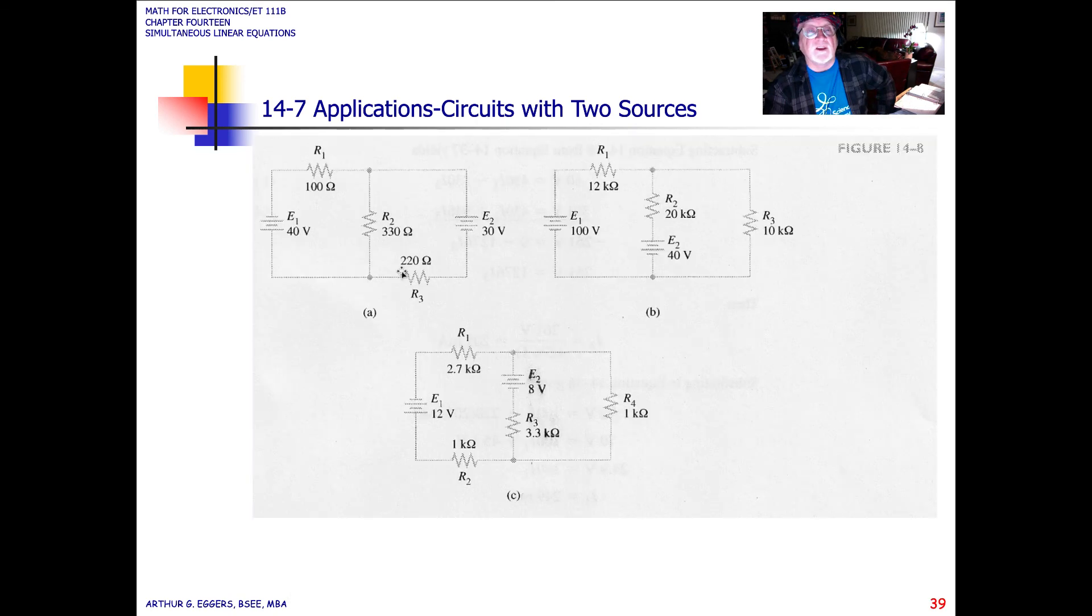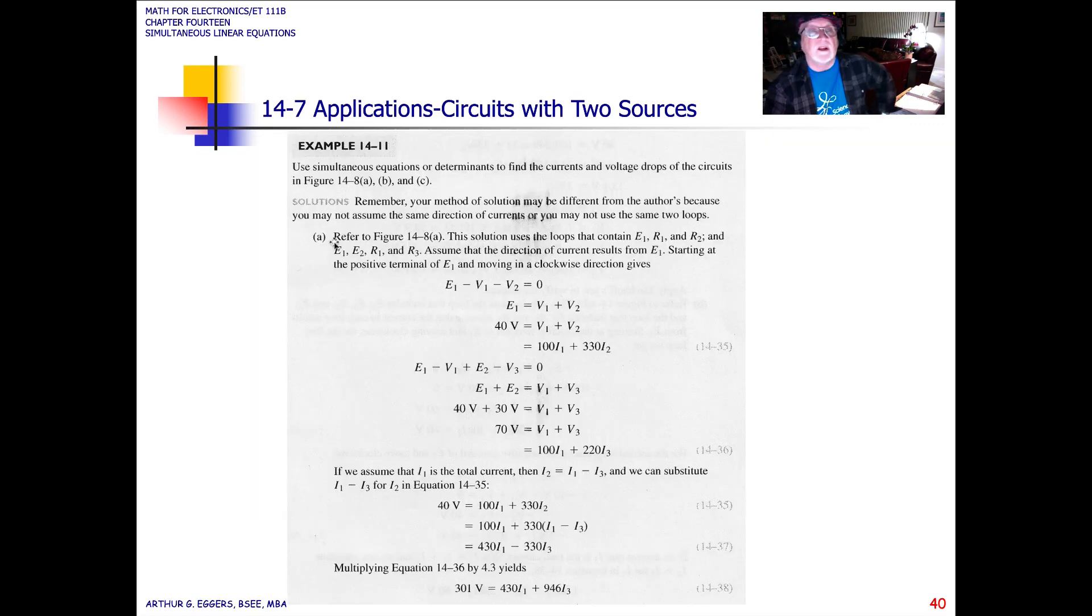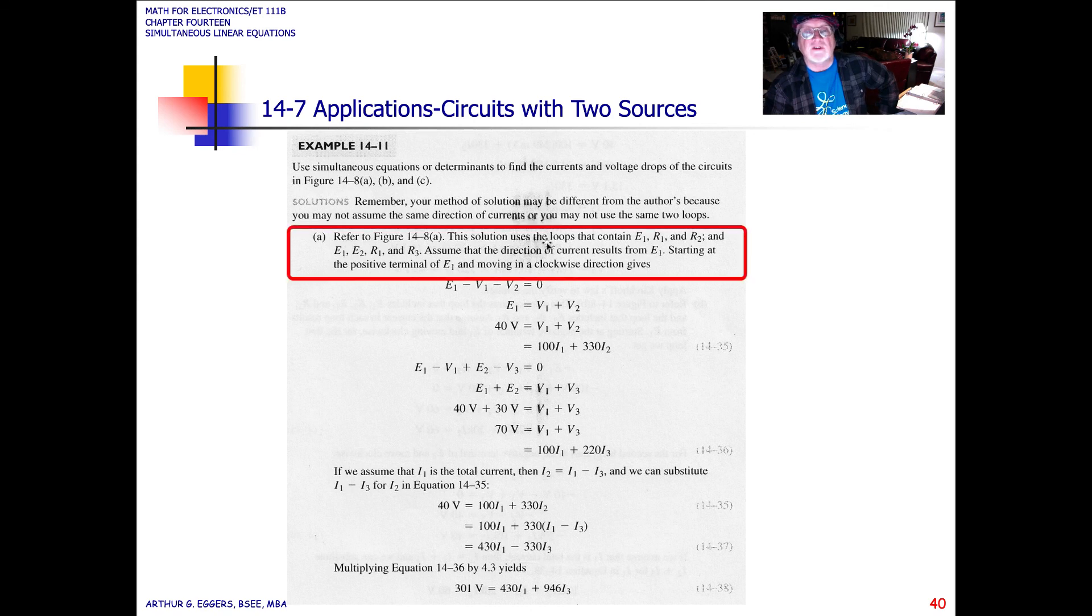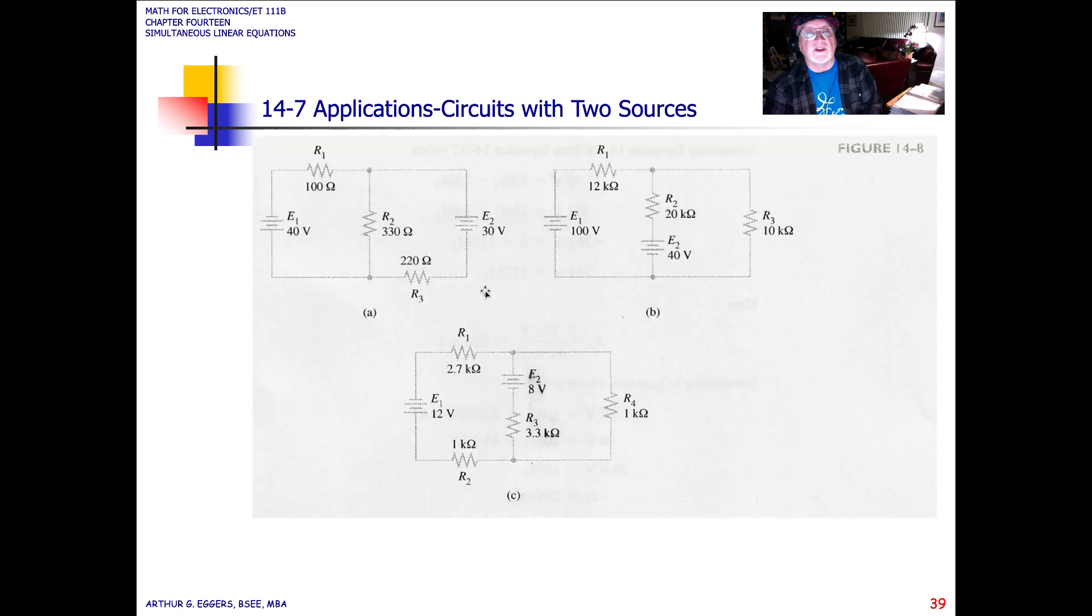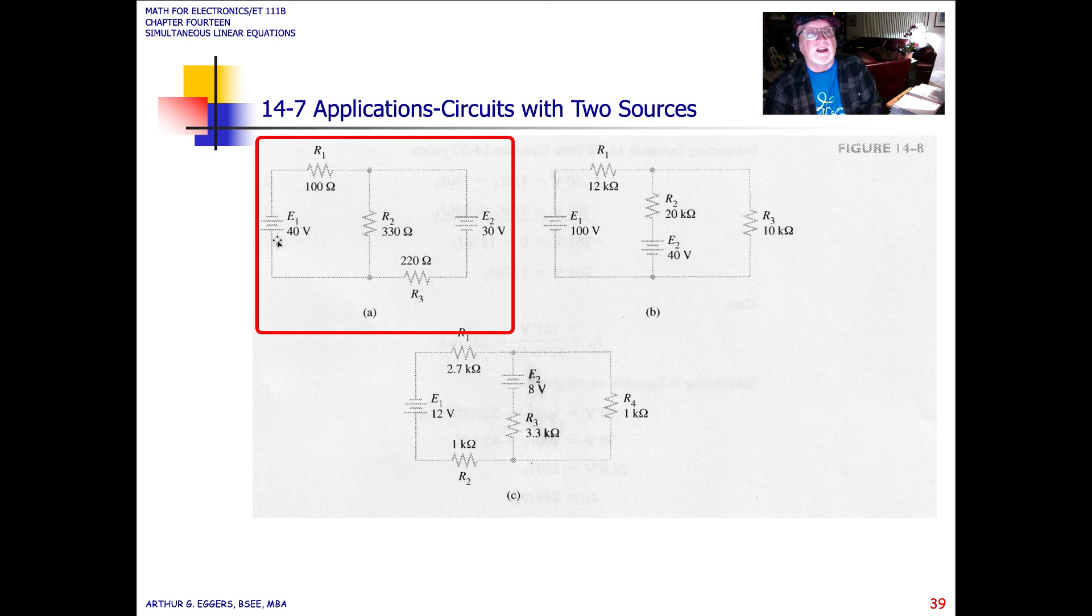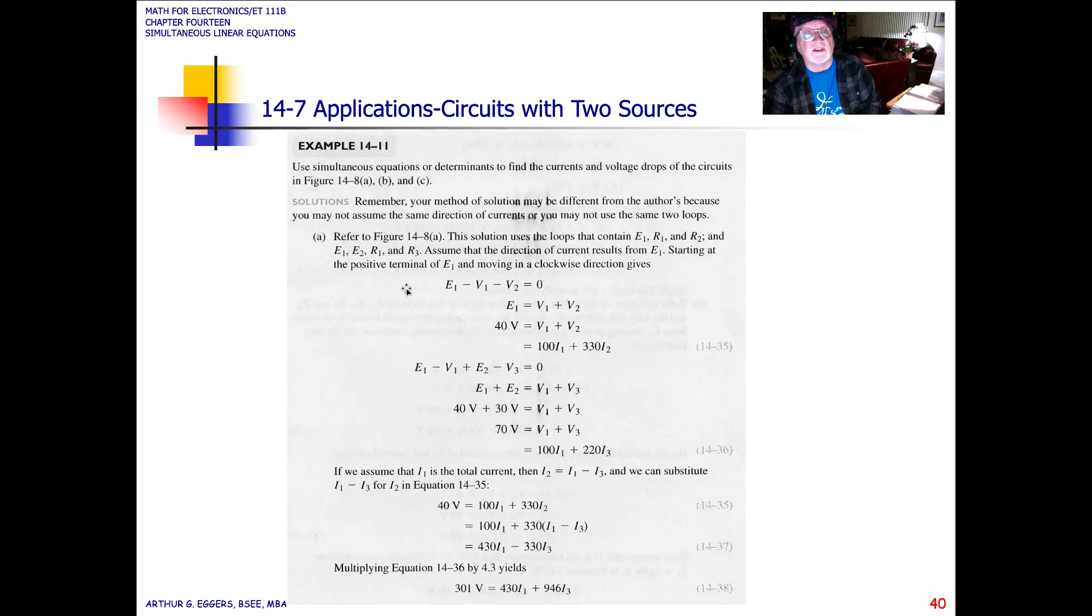So in figure A, this first figure here, which looks very similar to what we did previously, the solution uses the loops that contain the current E1, R1, R2, E1, E2, R1, and R3. Assume that the direction of current results from E1, starting at the positive terminal of E1, and moving in a clockwise direction. So they're telling you to start with the positive. If we start with the positive here on the lower side of E1, then everything else follows through with the proper polarity when you start laying these out.